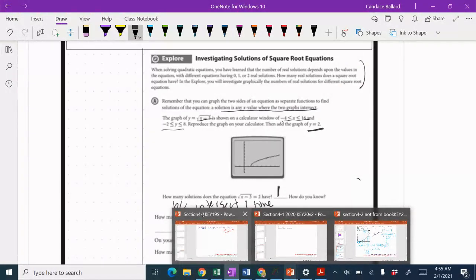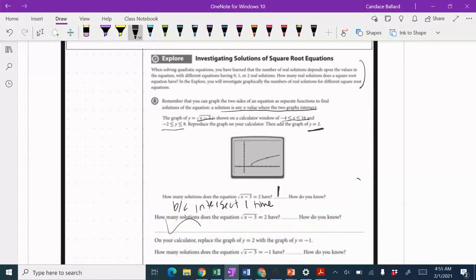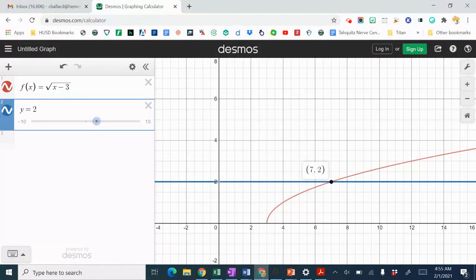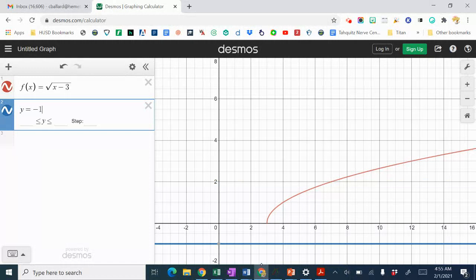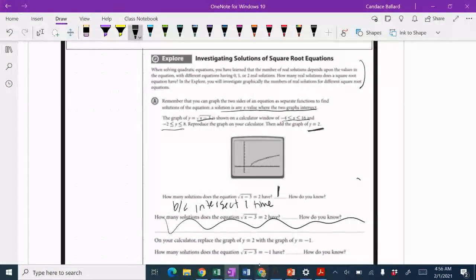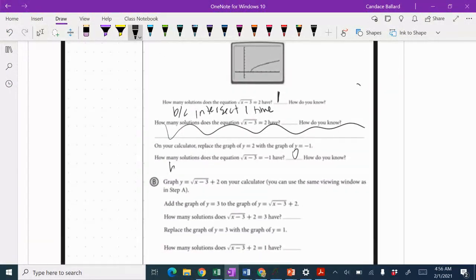On your calculated graph, replace the graph of y equals 2 with y equals negative 1. So let's take out the 2 and put negative 1. You'll notice now they do not intersect at all. In this case, they would have zero solutions because they don't intersect.